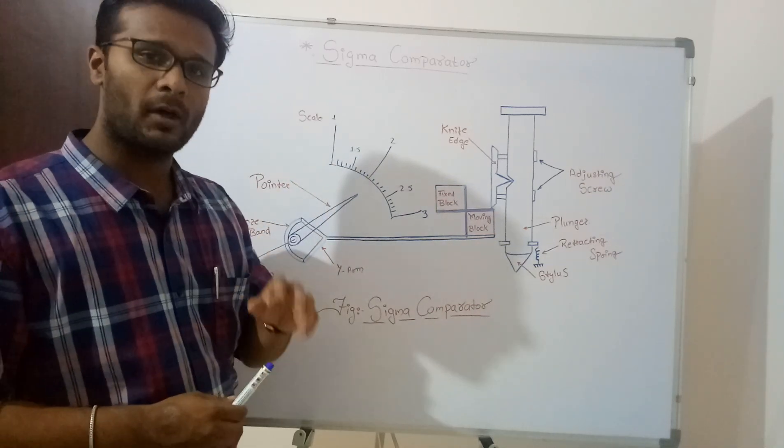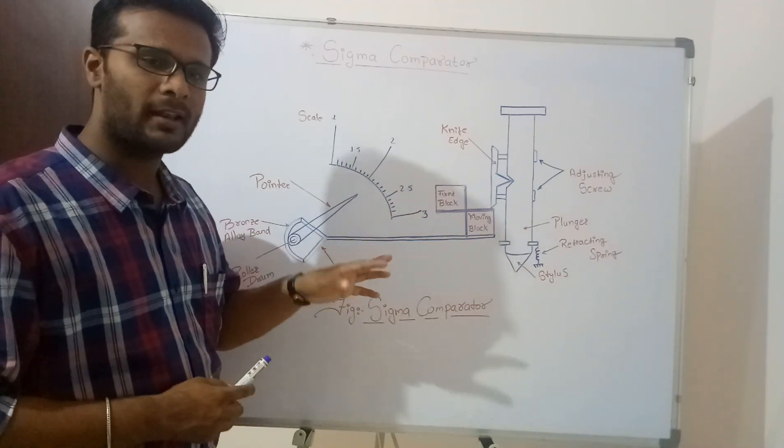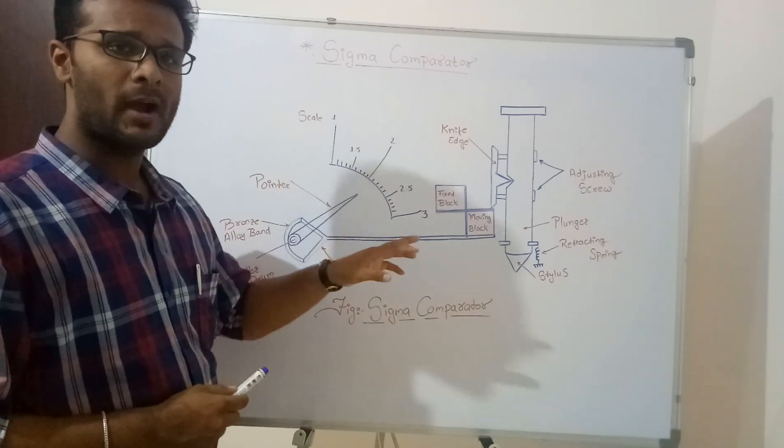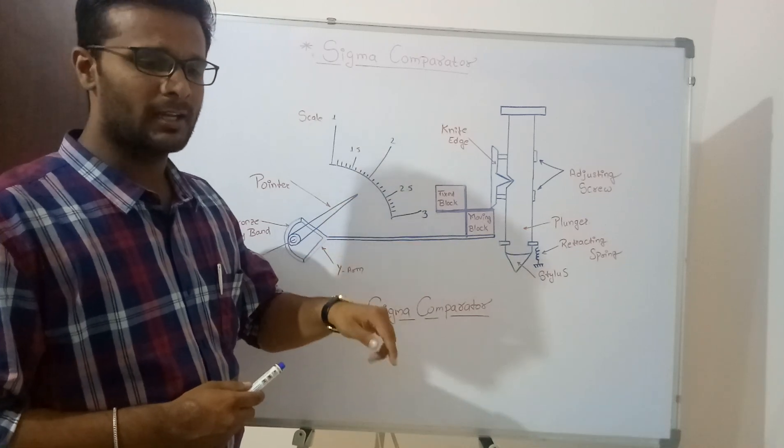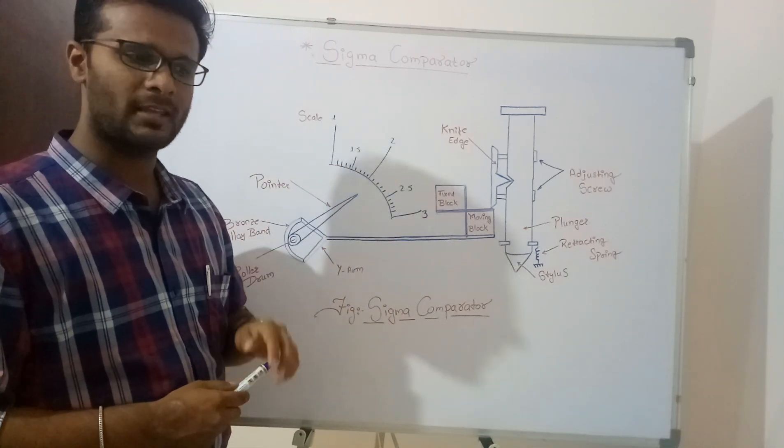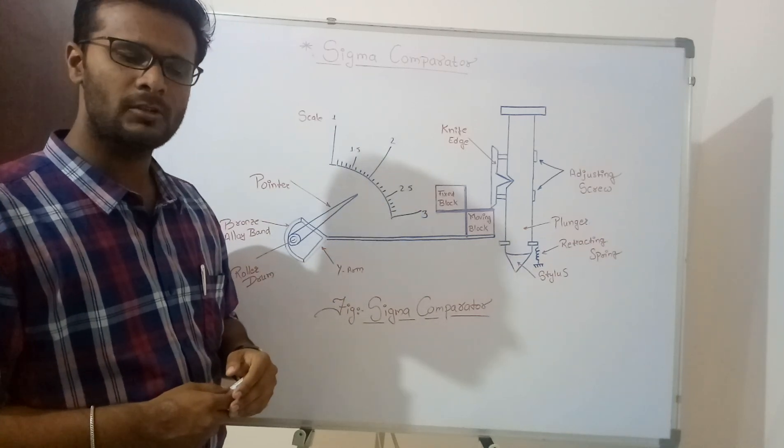So moving towards working of Sigma comparator, what exactly is Sigma comparator and how does it work? Sigma comparator is nothing but a device which is used to calculate or used to consider the reciprocating or linear differences in any of the quantities. It's a comparator most commonly used.